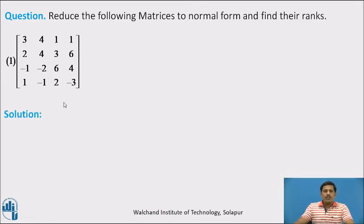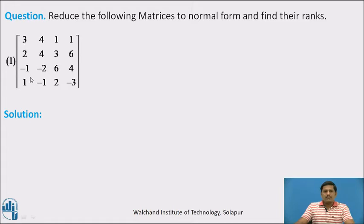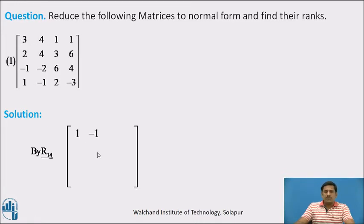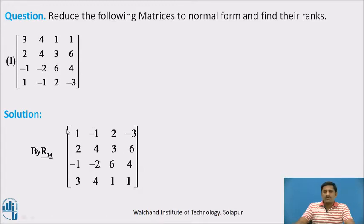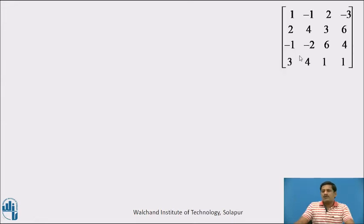Solution. Here the first entry is 3, so first we convert it to 1. We search for the entry 1 in column number 1. There is an entry 1 in column number 1, which is in row number 4. So we interchange row number 4 and row number 1 so that this first entry will be 1. When we interchange row 1 and row 4, we get this new matrix. Now our next aim is to reduce these three elements to 0 with the help of row number 1.